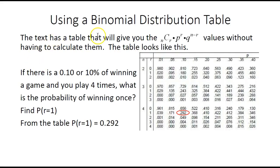Here is a portion of the binomial table. Here you see columns for N, R, and P. Remember that if P is known, then Q is known. That is why Q is not listed in the table.